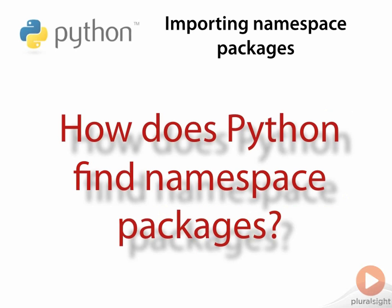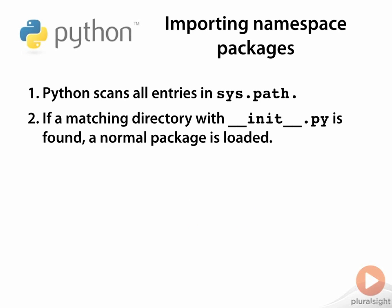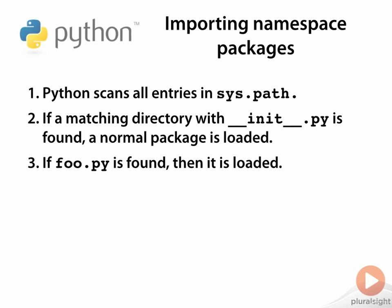When asked to import the name foo, Python scans each of the entries in sys.path in order. If, in any of these directories, it finds a directory named foo containing __init__.py, then a normal package is imported. If it doesn't find any normal packages, but it does find foo.py or any other file that can act as a module, then this module is imported instead.